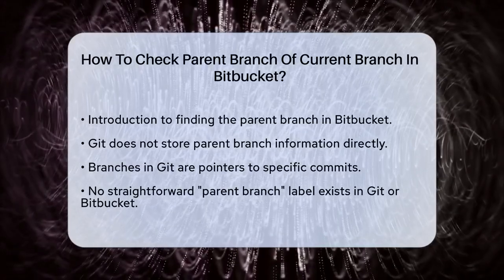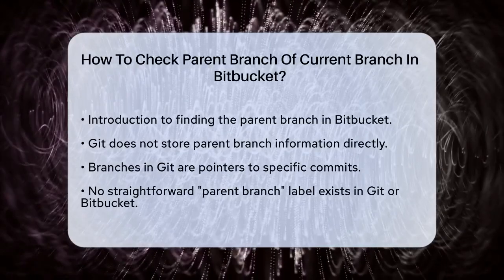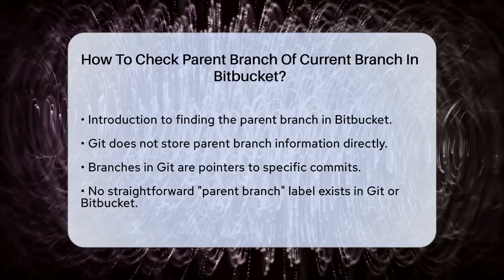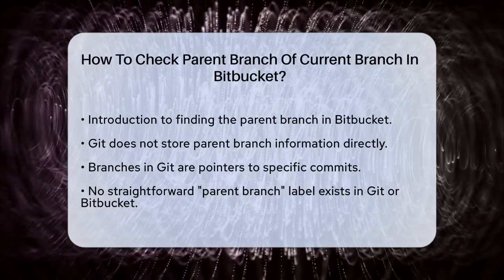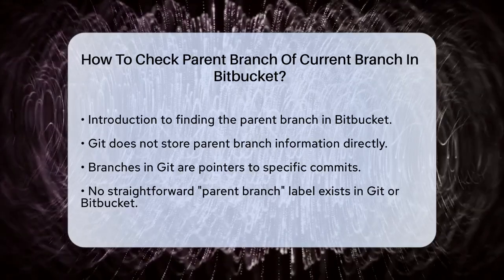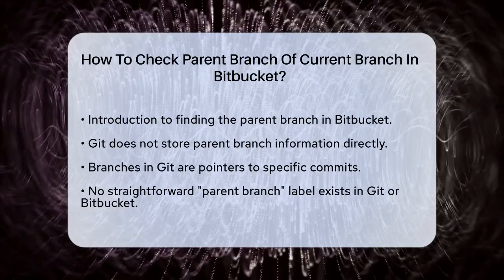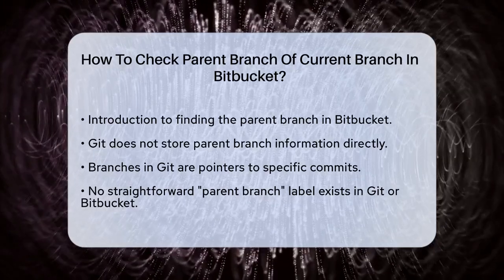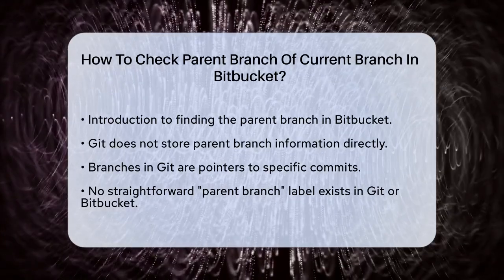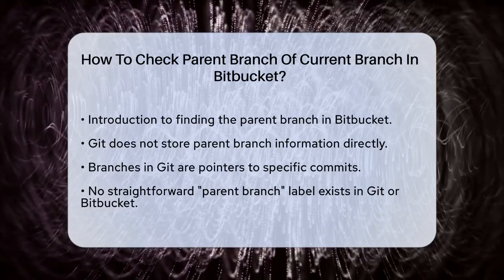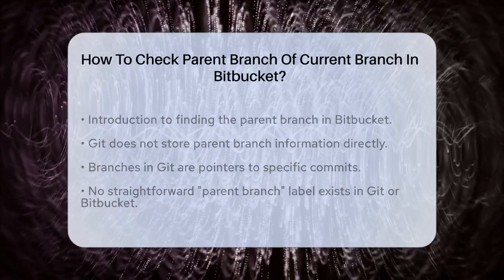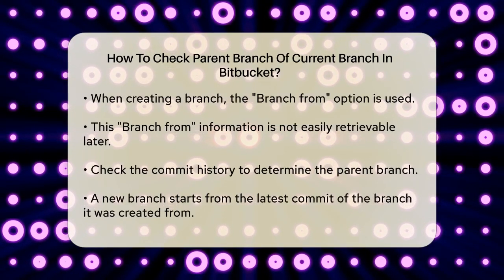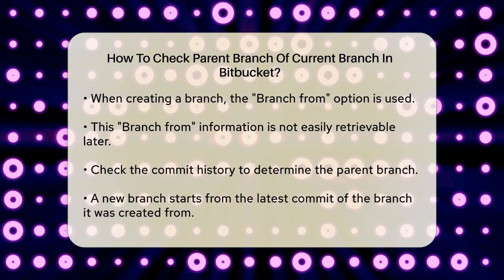First, it's important to understand that Git itself doesn't store the parent branch information directly. Instead, branches are just pointers to specific commits, so you won't find a straightforward parent branch label in Git or Bitbucket. When you create a new branch in Bitbucket, you typically select the 'branch from' option to specify the branch you're branching off from. However, this information isn't stored in a way that you can easily retrieve later.